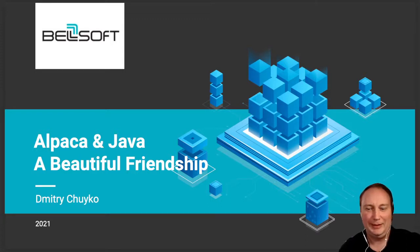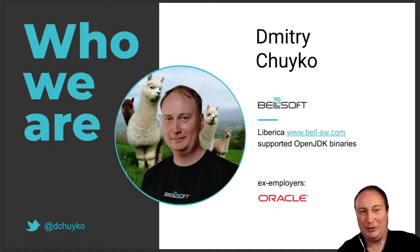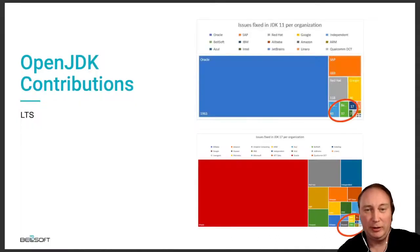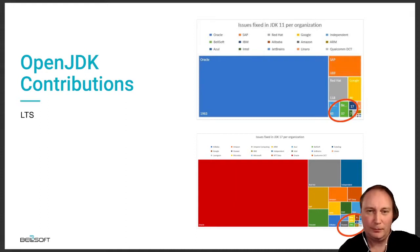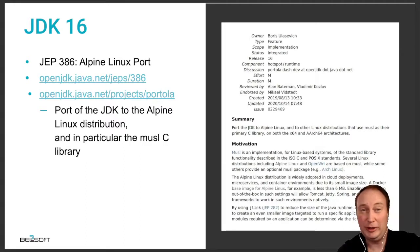Hello, let's talk about a new friend of Java. Its name is Alpaca, and Alpaca is a Linux distribution. I mostly talk about Java because I work in the OpenJDK community at a company named BellSoft, and BellSoft is among the top contributors in OpenJDK as a company.